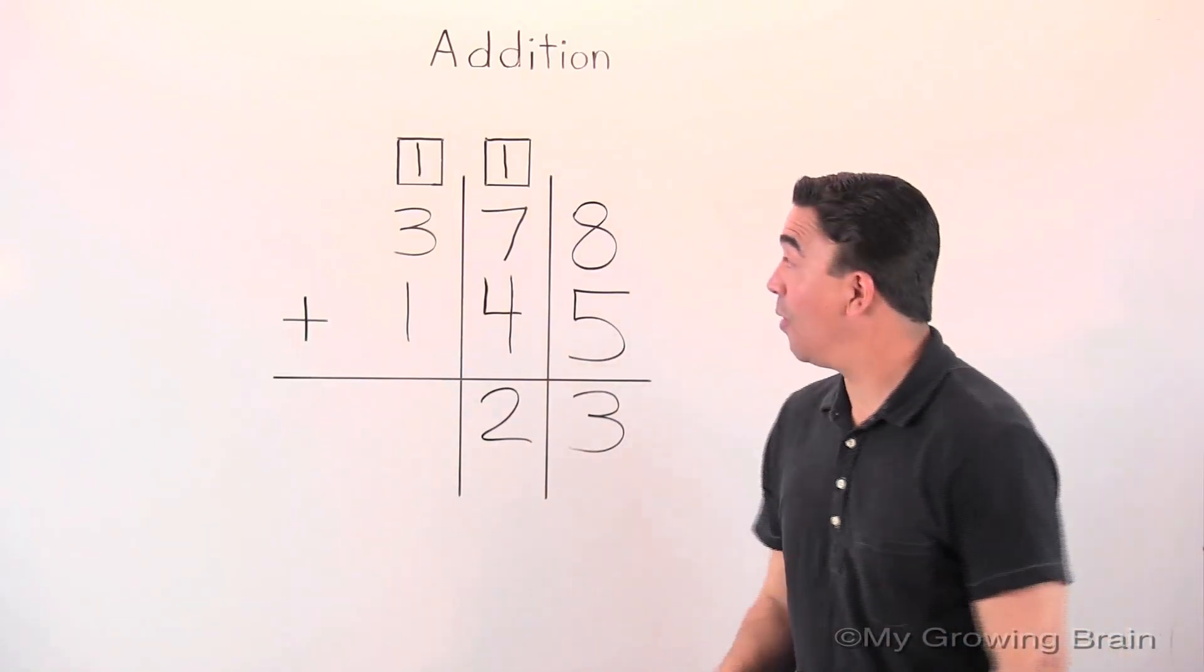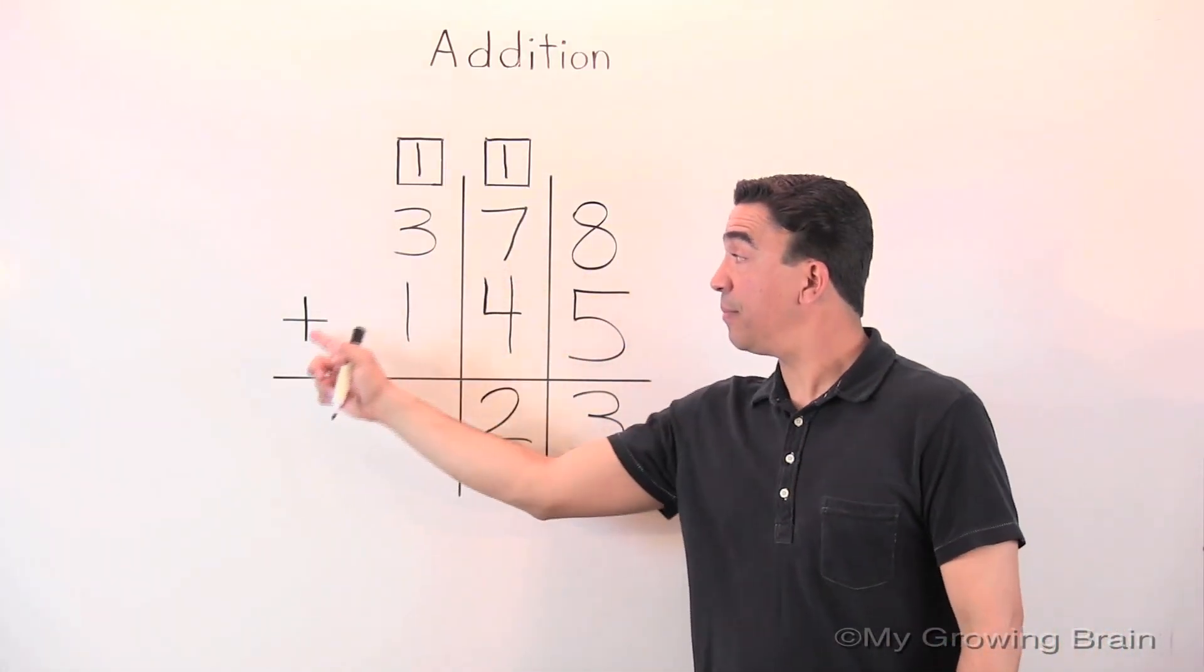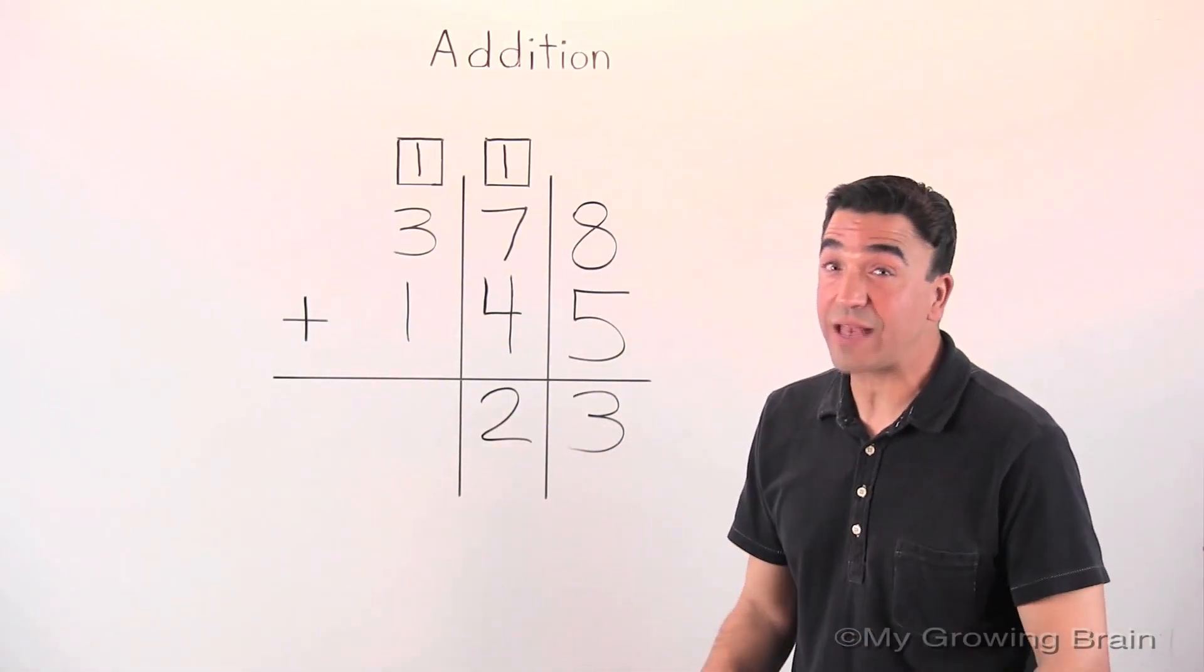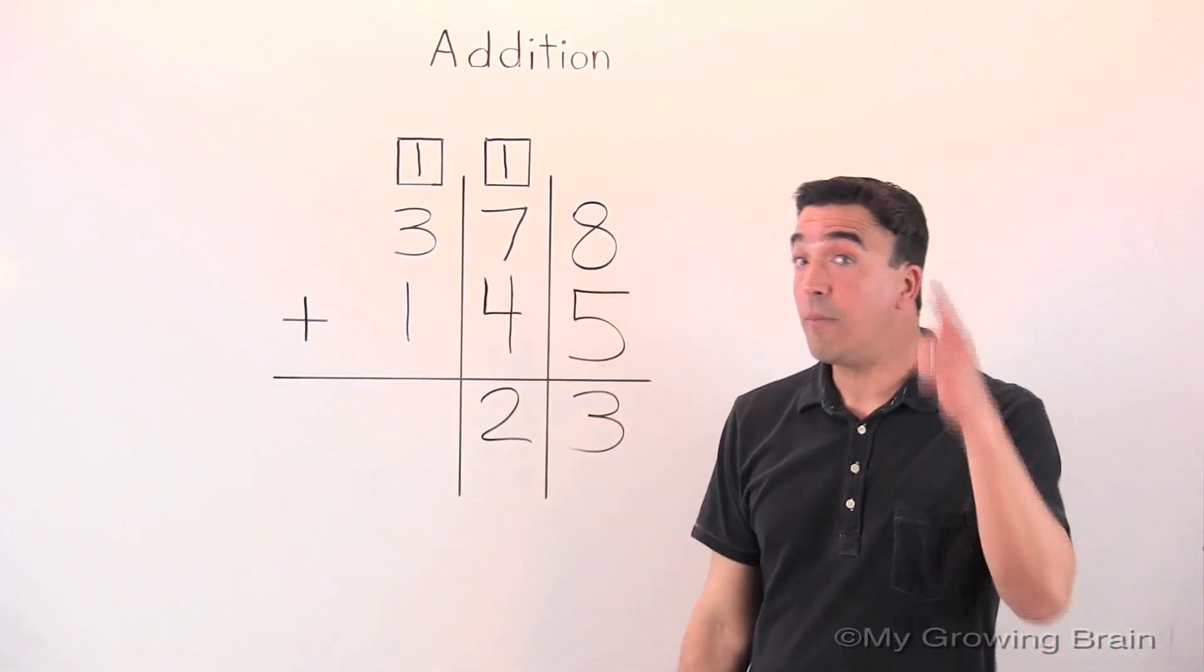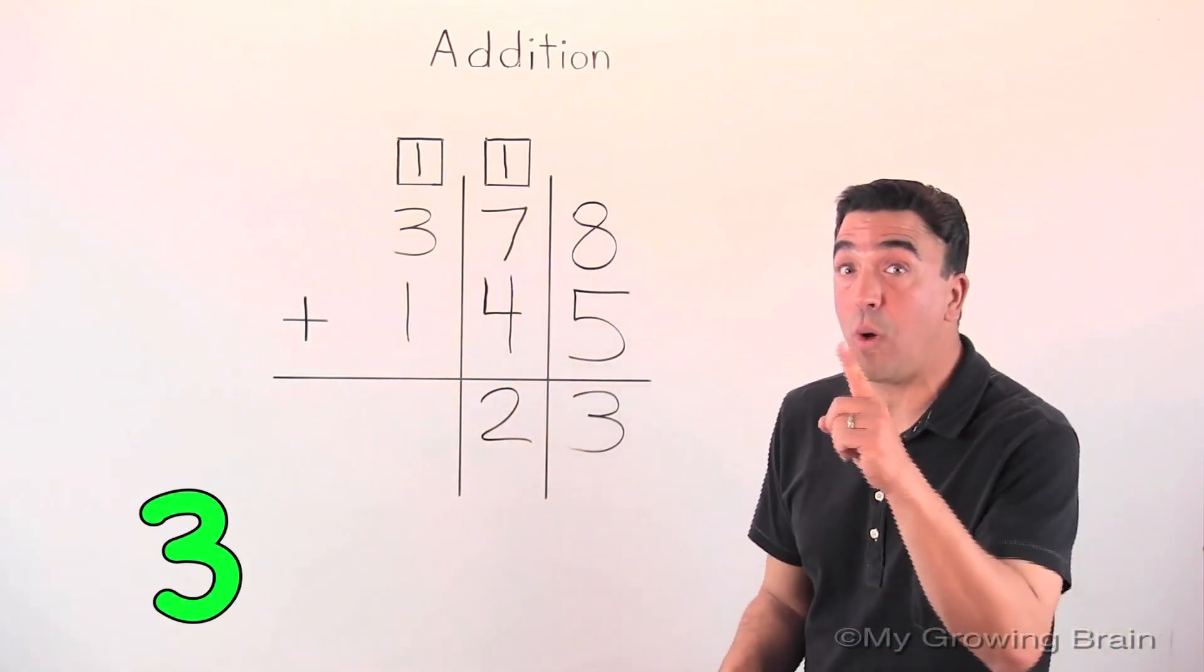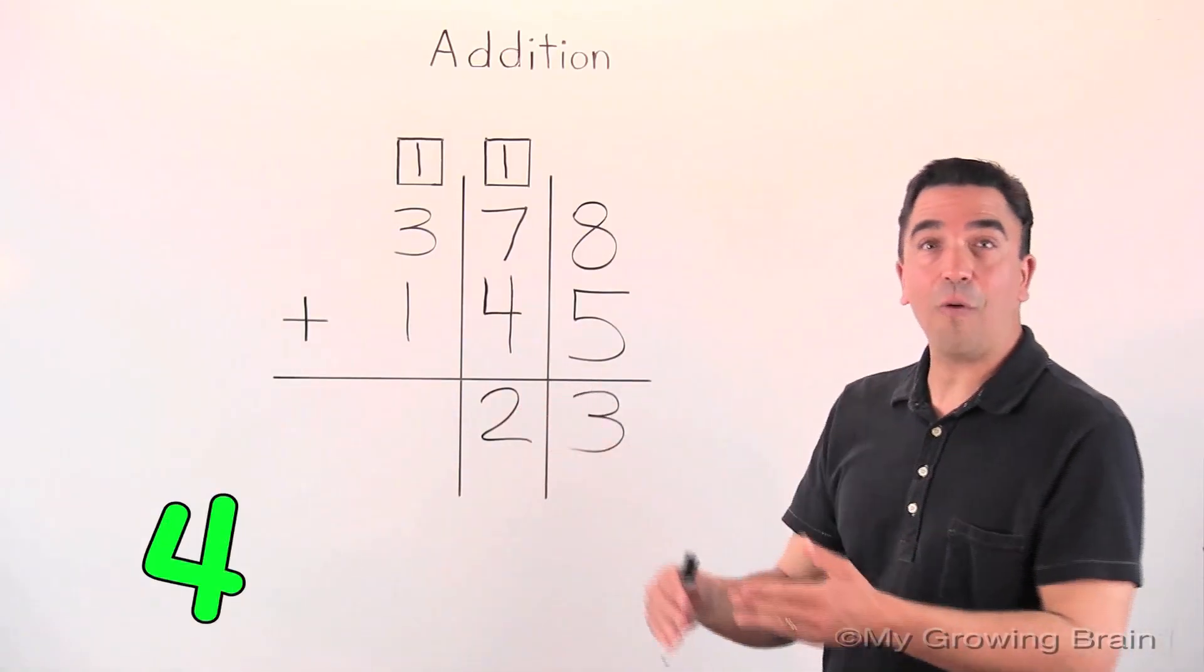Now we're working in the hundreds place. Three plus one. Once again, the counting-on strategy. Take the greater number, three, put it in our head. Count up one: three, four. Four!